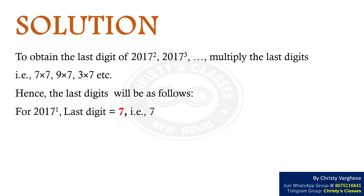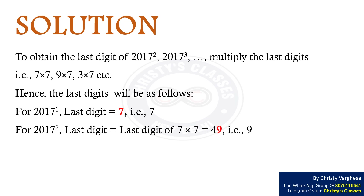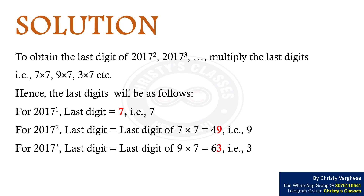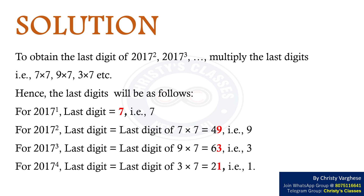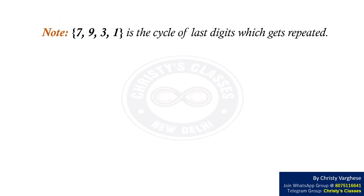For 2017 to the power 1, the last digit equals 7. For 2017 squared, last digit equals last digit of 7×7 = 49, i.e., 9. For 2017 cubed, last digit equals last digit of 9×7 = 63, i.e., 3. For 2017 to the power 4, last digit equals last digit of 3×7 = 21, i.e., 1. From the above calculation, it is clear that 7, 9, 3, 1 is the cycle of last digits which gets repeated.